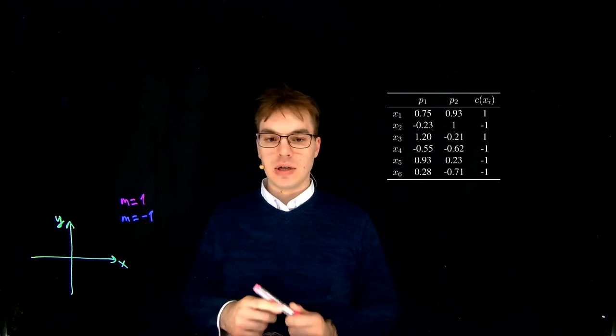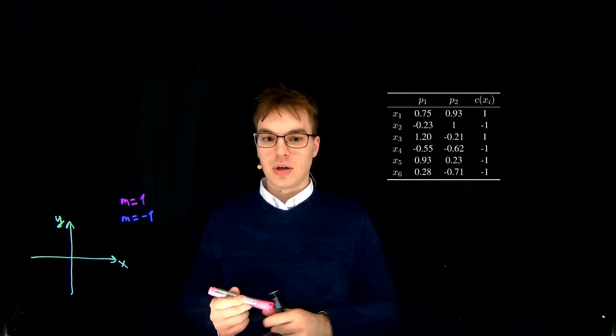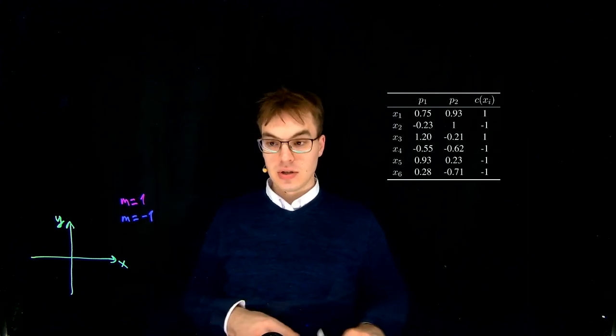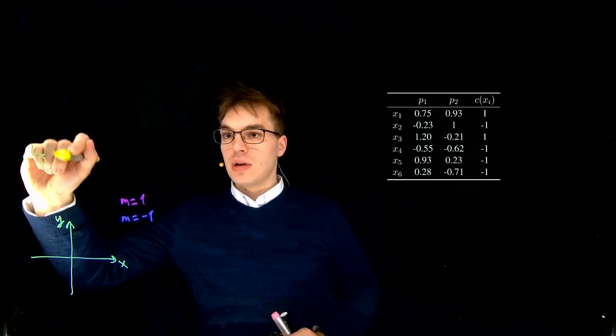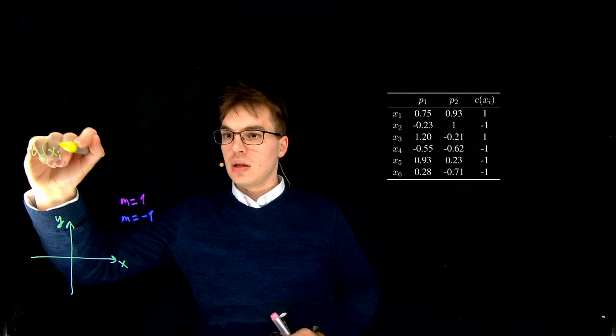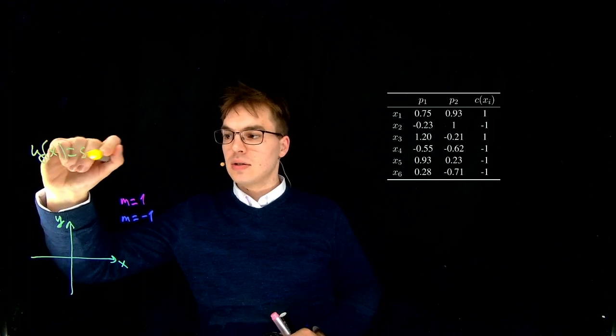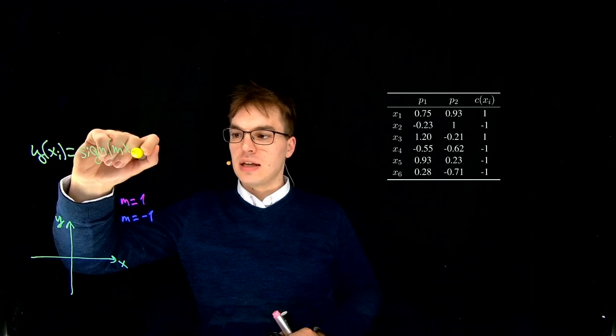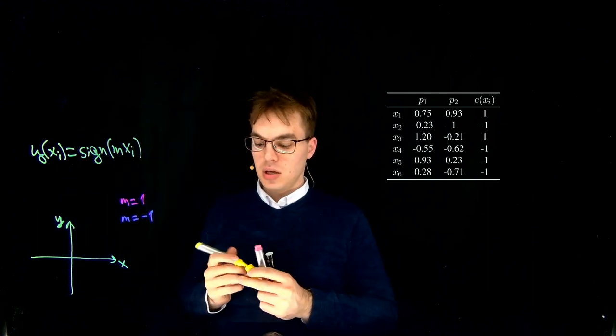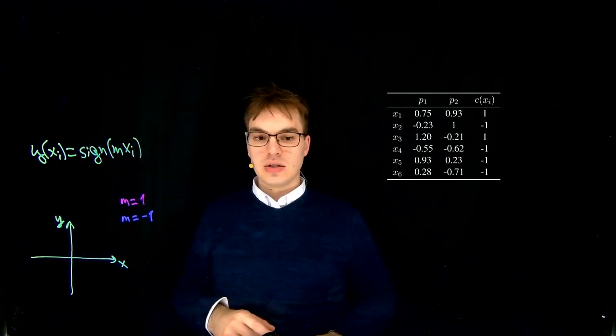The one is m equals 1 and the other one is m equals minus 1. So for our function that we are given, y equals the sign of m times xi, we get these two choices.